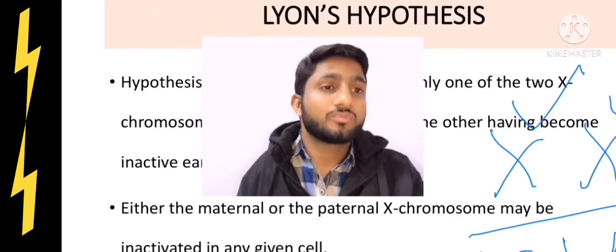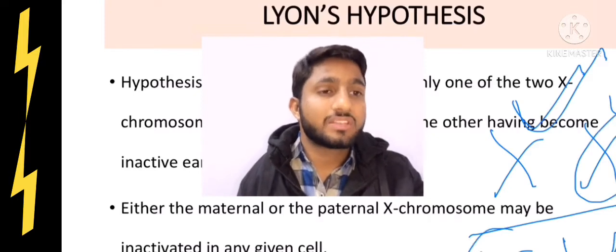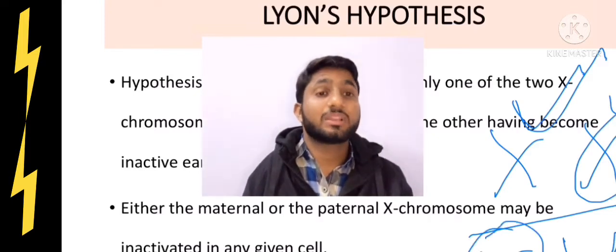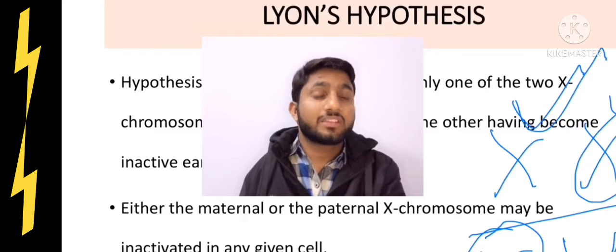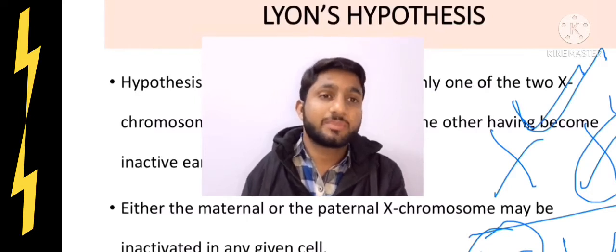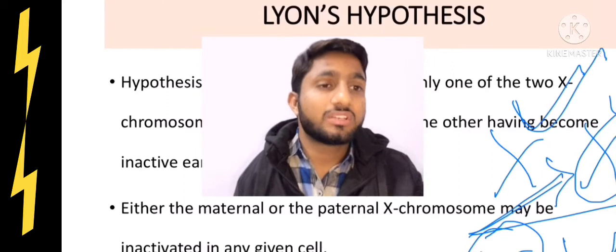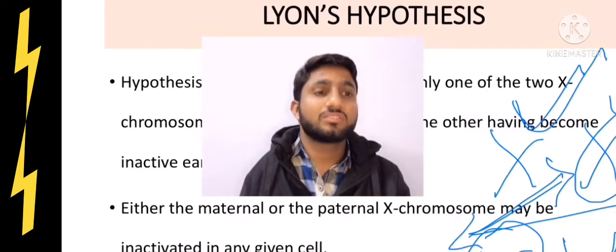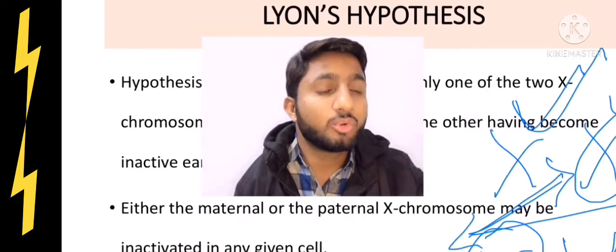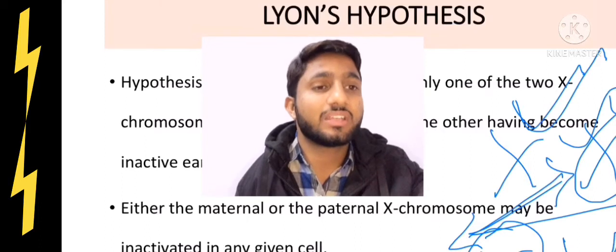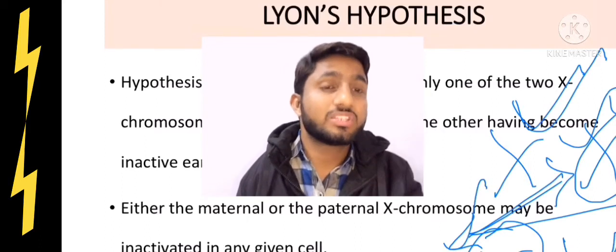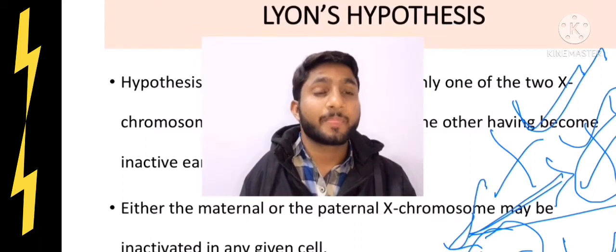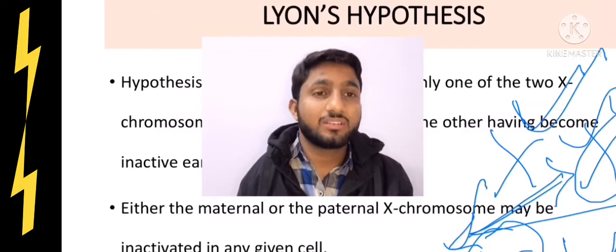Because if one of them will be inactivated, the X chromosomes will become equal in terms of gene expression. There will be a competition as well to determine the sex. If there will be more genes expressed in both X chromosomes, there will be chances of female production or the production of a daughter in a future generation.